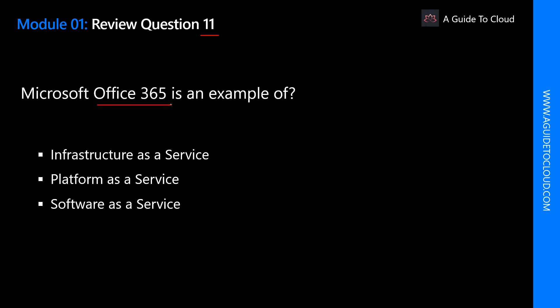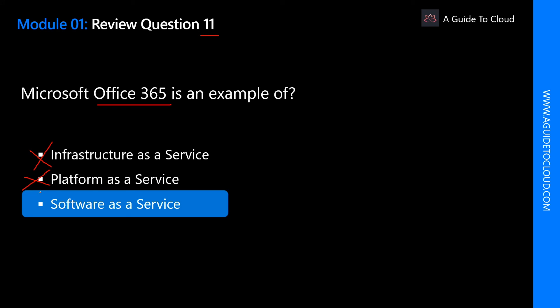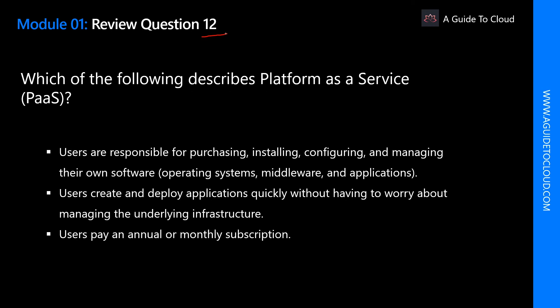Question 11: Microsoft Office 365 is an example of which type of cloud model? It is not infrastructure as a service — Exchange on-premises would be an example of IaaS. It is not platform as a service either — PaaS is where you get an application environment to develop, deploy, and test. The right answer is software as a service, because SaaS is typically licensed through a monthly or annual subscription, which is how Office 365 is offered.